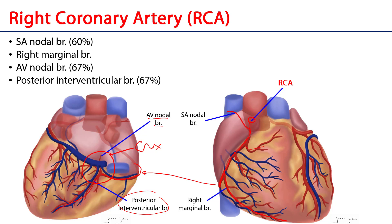In almost 70% of individuals these branches are supplied exclusively by the RCA — a condition known as right dominance. In the remaining individuals they are either supplied by both the RCA and the LCA, a condition known as codominance, or exclusively by the LCA in a minority of cases — a condition known as left dominance.